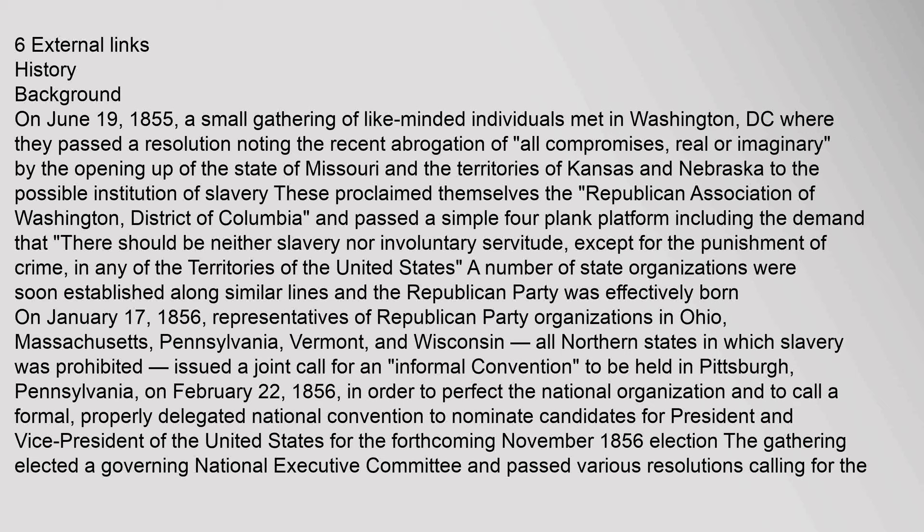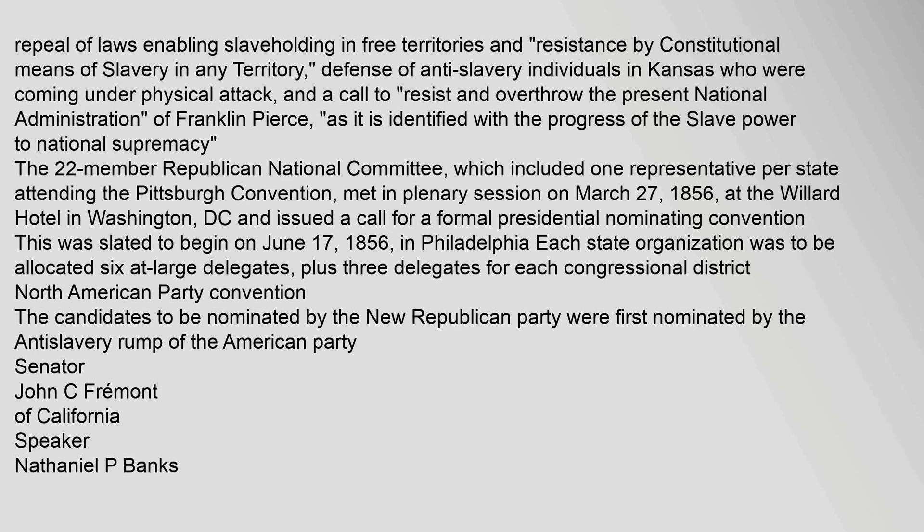The gathering elected a governing national executive committee and passed various resolutions calling for the repeal of laws enabling slaveholding in free territories and resistance by constitutional means of slavery in any territory, defense of anti-slavery individuals in Kansas who were coming under physical attack, and a call to resist and overthrow the present national administration of Franklin Pierce, as it is identified with the progress of the slave power to national supremacy.